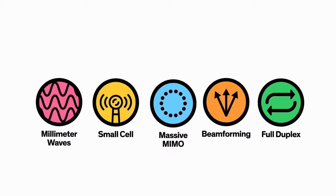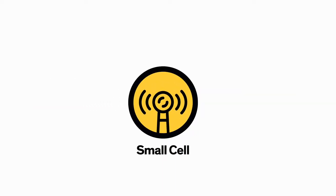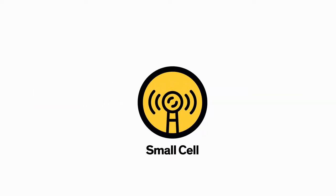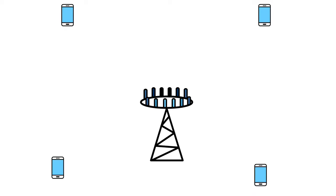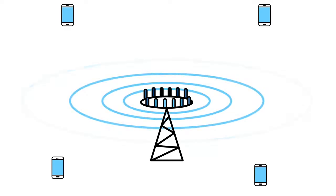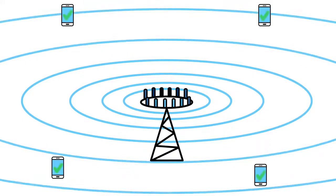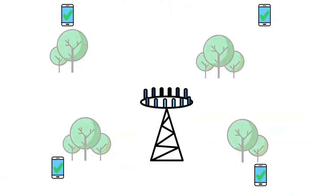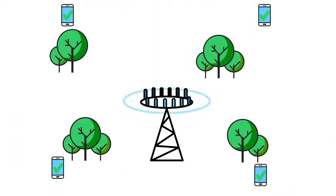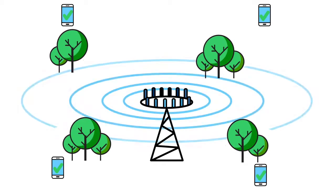To get around this problem, we'll need technology number two, small cell networks. Today's wireless networks rely on large high-powered cell towers to broadcast their signals over long distances. But remember, higher frequency millimeter waves have a harder time traveling through obstacles, which means if you move behind one, you lose your signal.